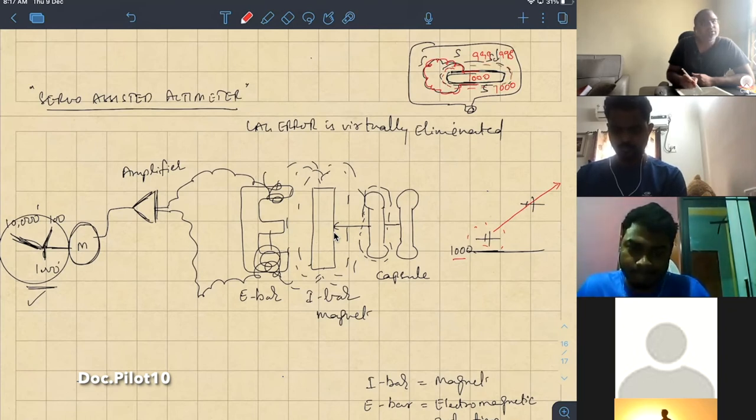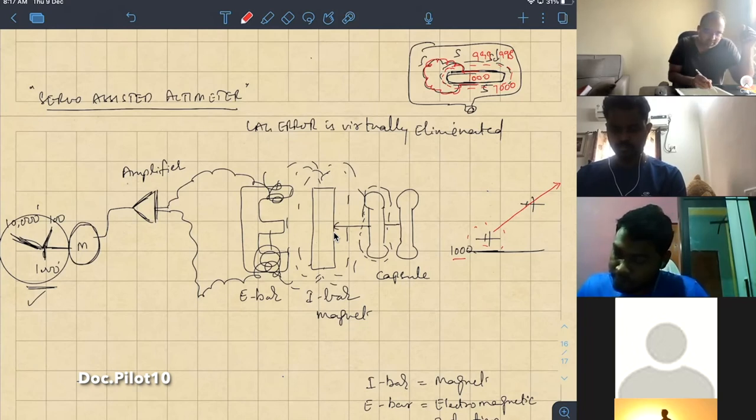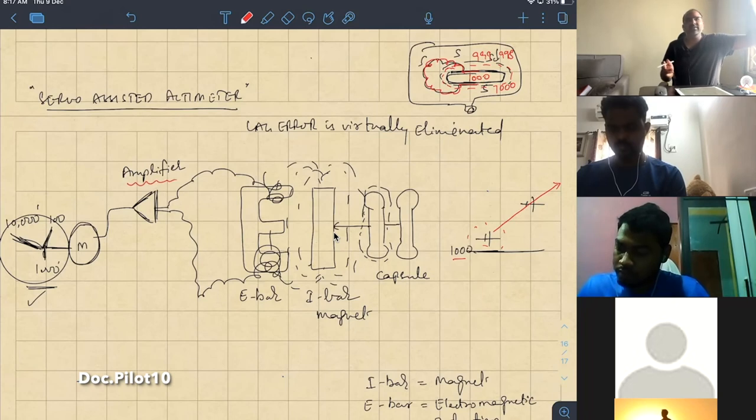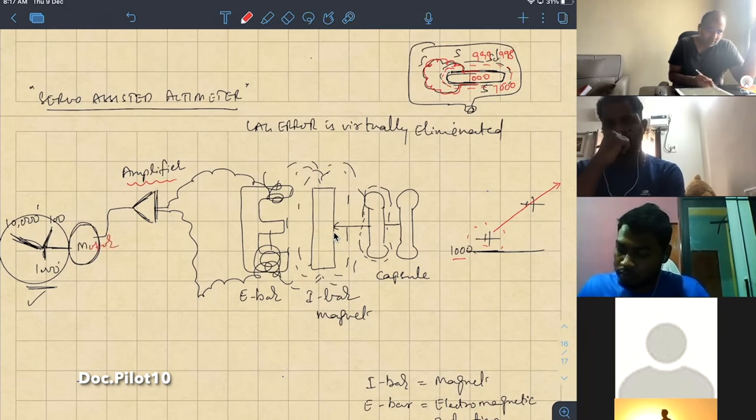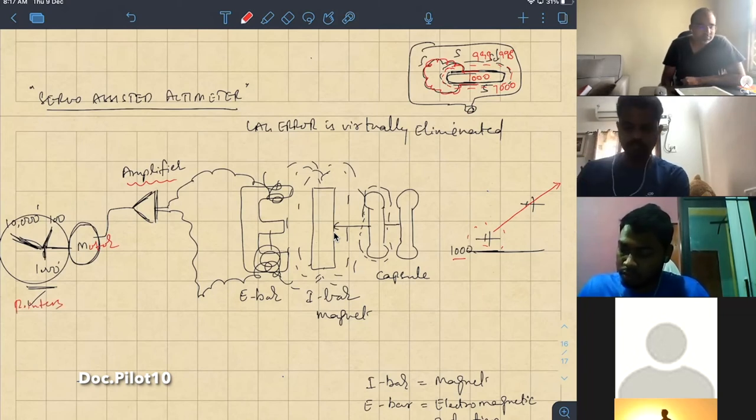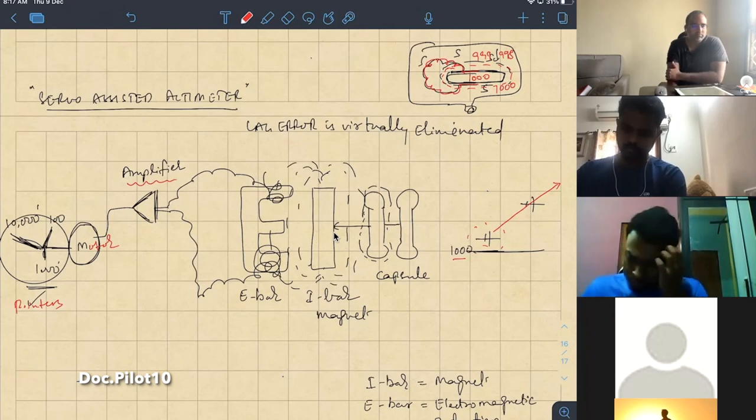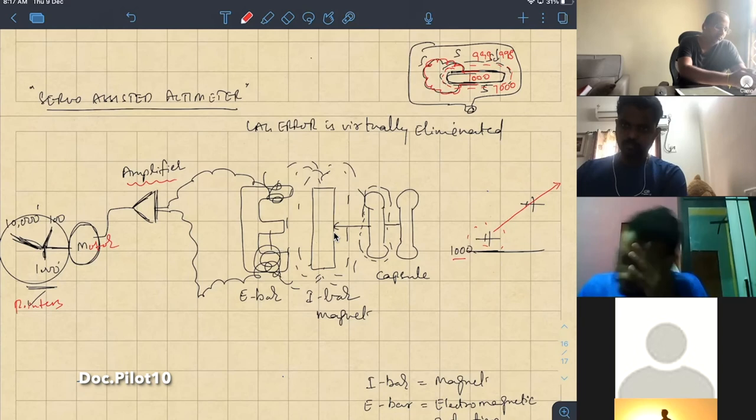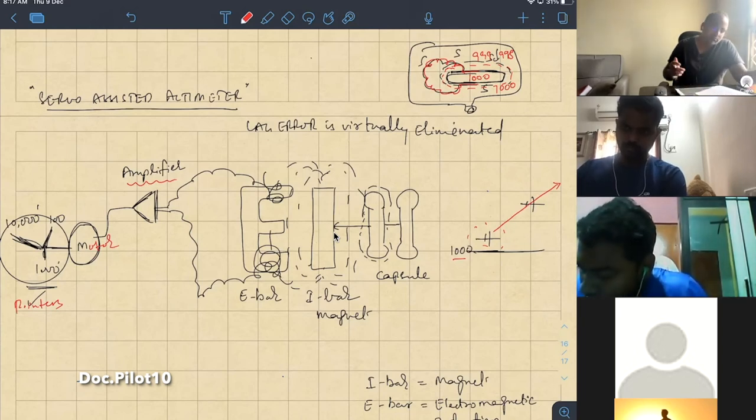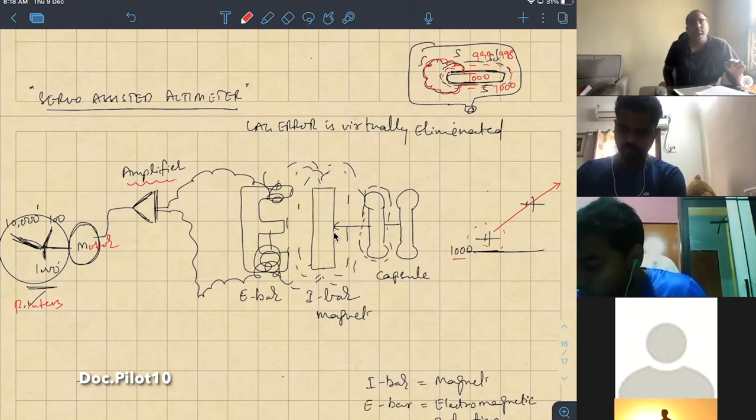When it expands, it will push the I-bar. That small push, even it is in micromillimeters, that will lead to some rate of change of flux, some change of flux in the E-bar. E-bar picks up that small current and gives it to amplifier. Amplifier increases the current. It will increase the current proportionately, and it will send to a motor, and motor will rotate the pointers. Am I super clear on this?